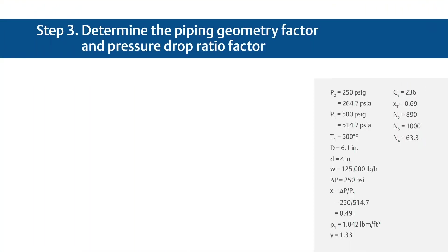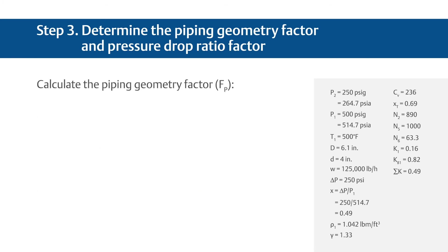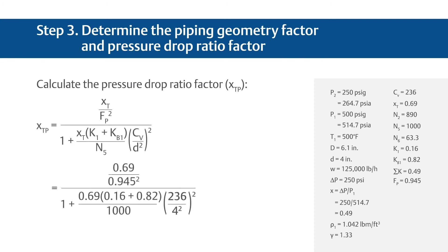In Step 3, determine the piping geometry factor, or F sub P, and the pressure drop ratio factor, or X sub TP, adjusted for the attached fittings. First, find the necessary resistance coefficients needed when the upstream and downstream pipe sizes are the same. Use the standard K sub 1 equation. Plug in your variables for a result of 0.16. Now use the standard K sub B1 equation and insert your variables for a result of 0.82. And use the standard Sigma K equation and apply the variables for a result of 0.49. Now let's calculate the piping geometry factor, or F sub P. Use the standard F sub P equation. Plug in your variables for a resulting F sub P value of 0.93. For the last part of Step 3, calculate the pressure drop ratio factor, or X sub TP. Use the standard X sub TP equation and insert the variables for a calculation of 0.67.